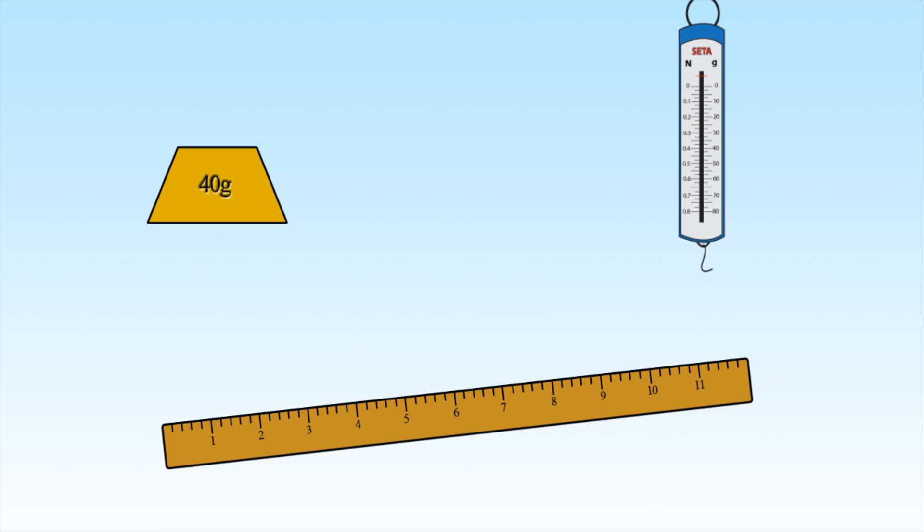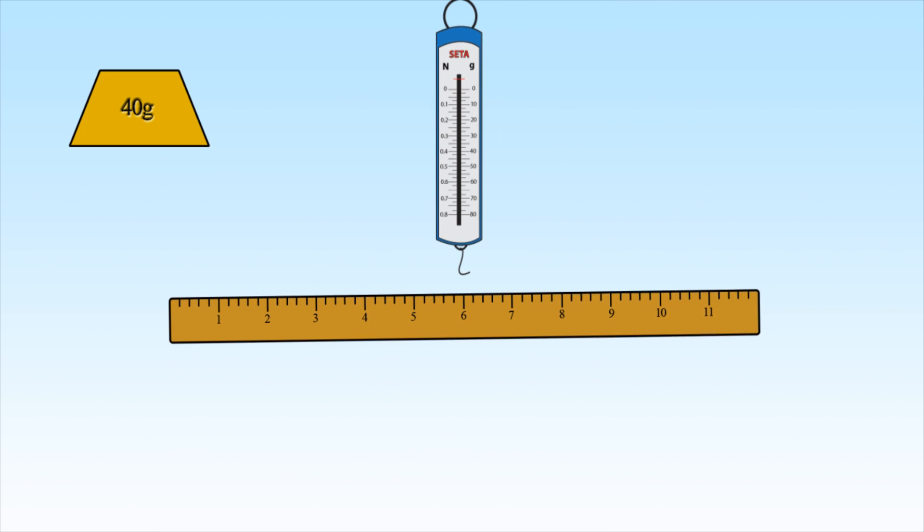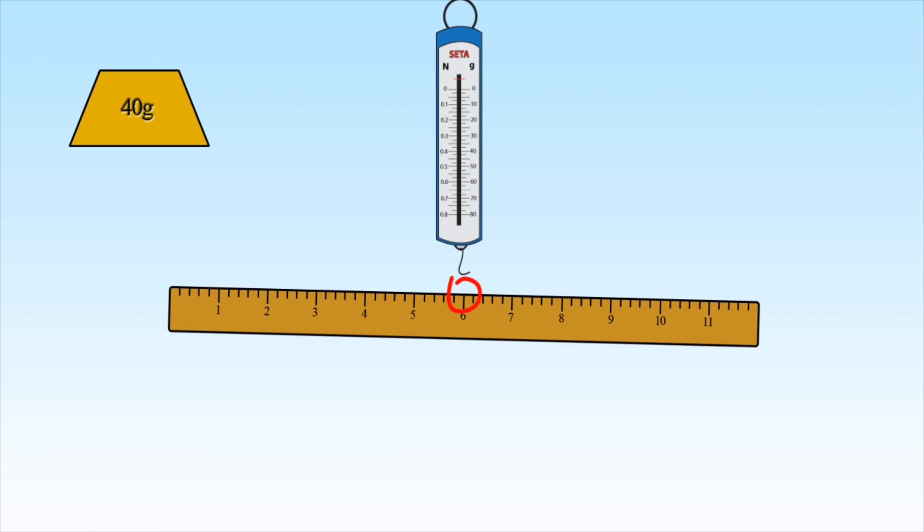To start this experiment, set up the apparatus as shown. The spring balance should be in the center of the meter stick as it will act as the fulcrum and will not be included as a force.